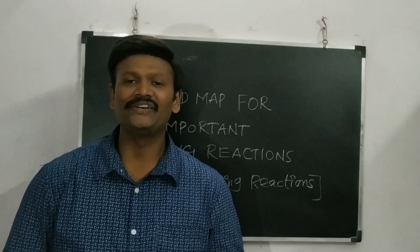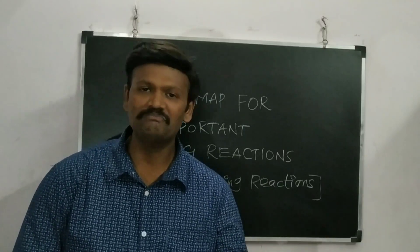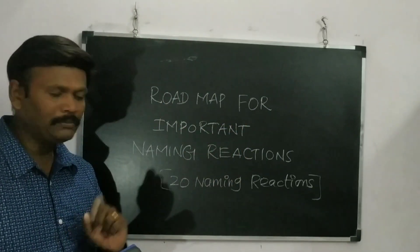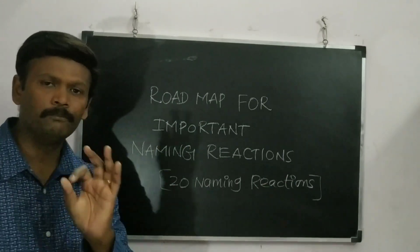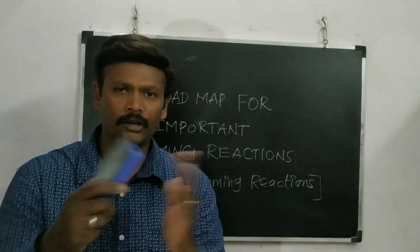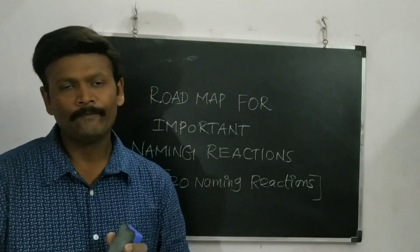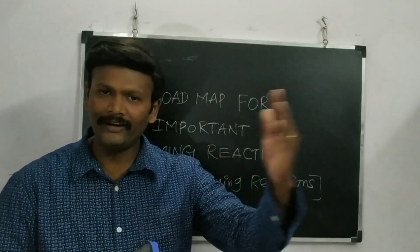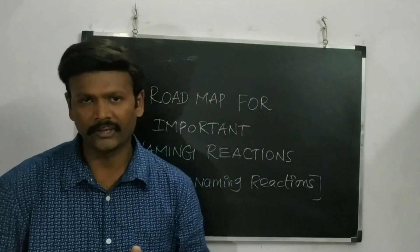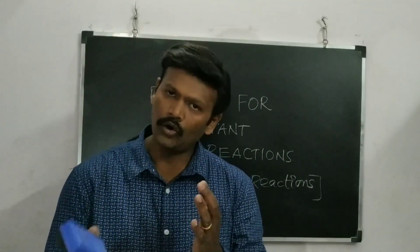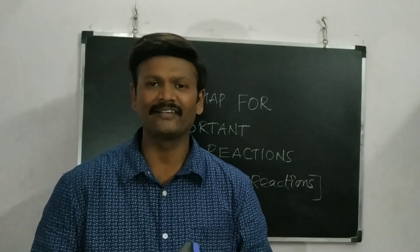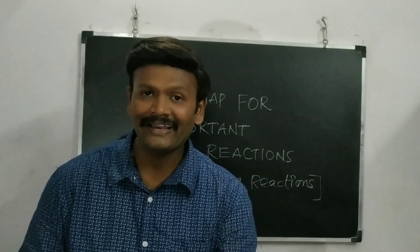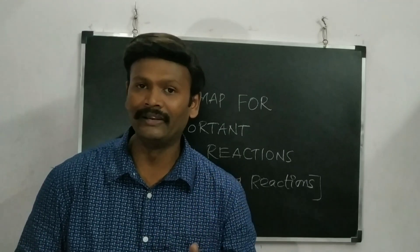Welcome to our channel. Today we are going to talk about a very important topic: the roadmap for important naming reactions. In this roadmap, we discuss 20 naming reactions — both aliphatic and aromatic. This roadmap can be divided into two parts: one for aliphatic naming reactions and one for aromatic naming reactions, including some reactions common to both. If you are not subscribed to this channel, go and subscribe now and click the bell icon to get notified whenever a new video is uploaded.